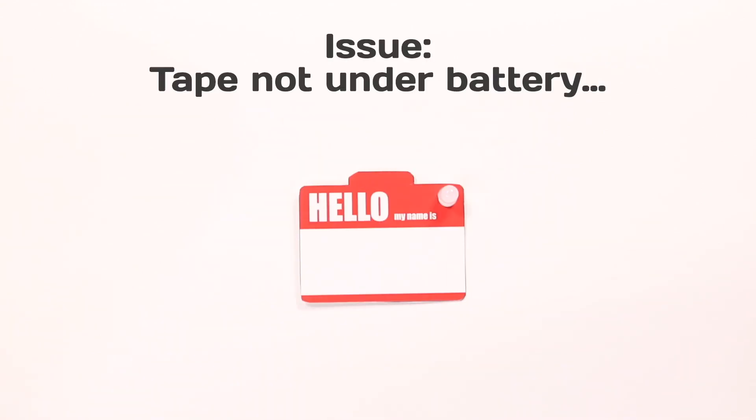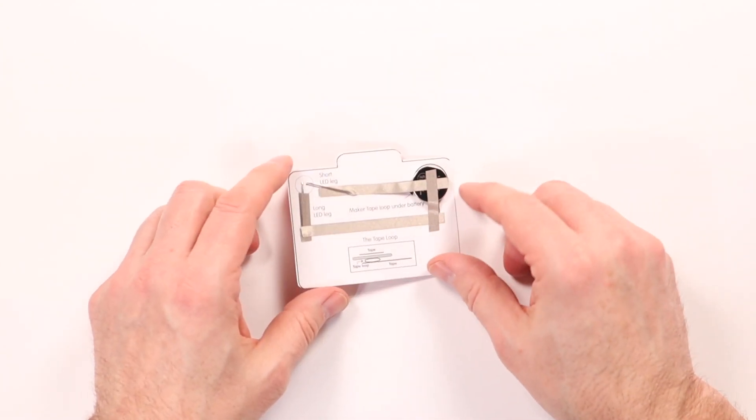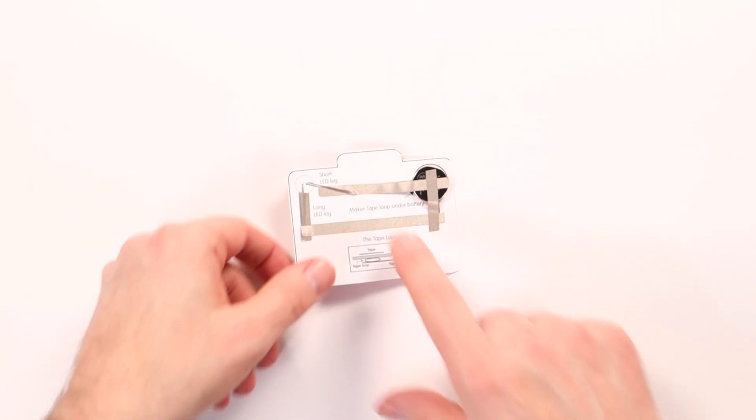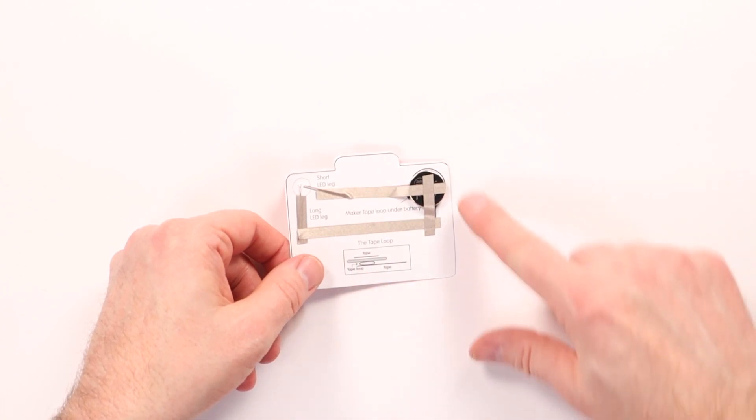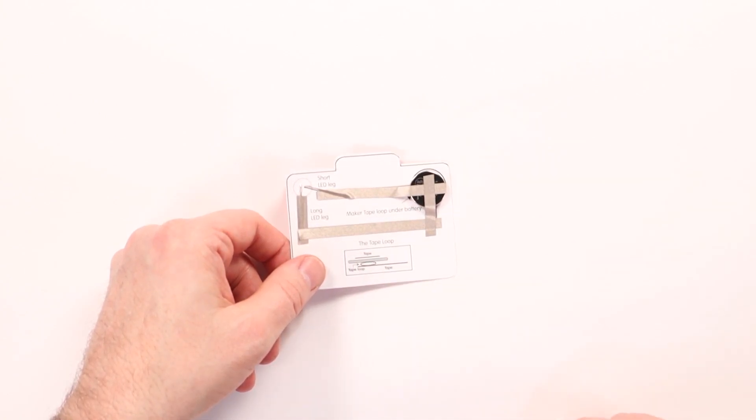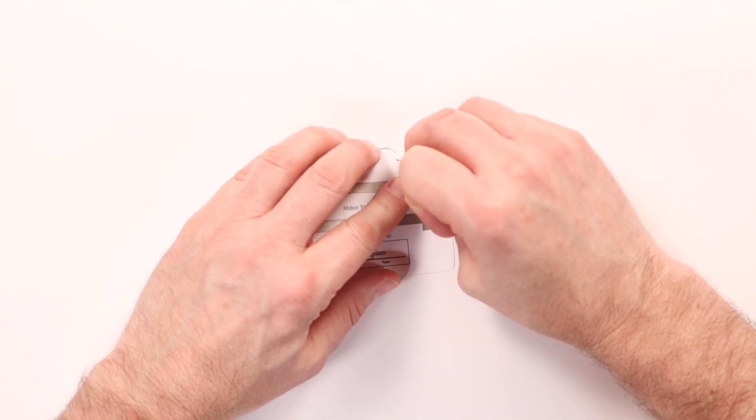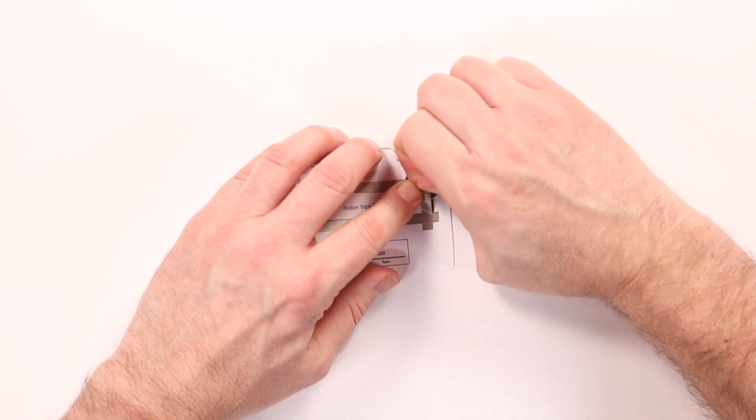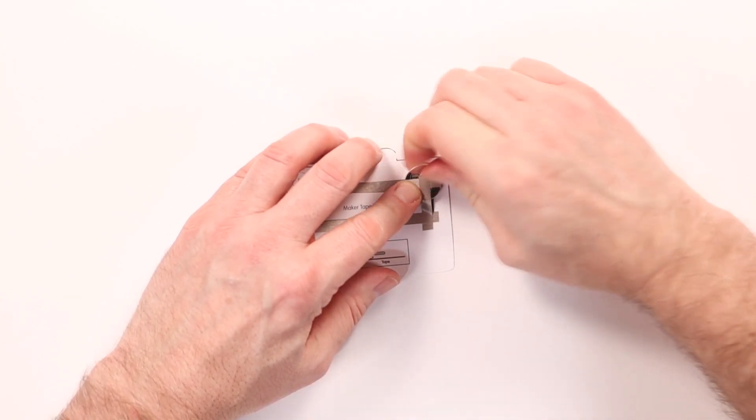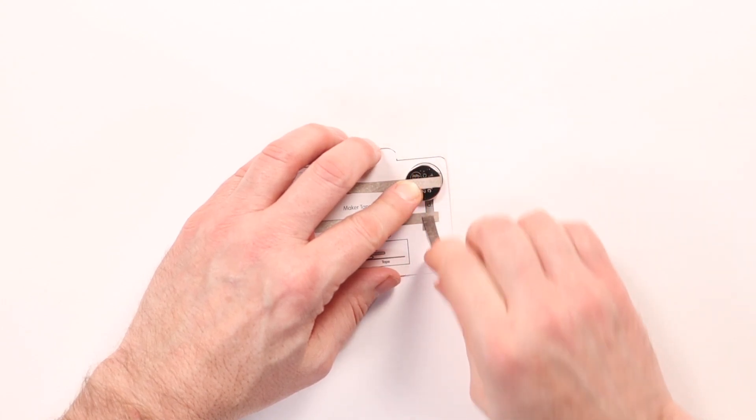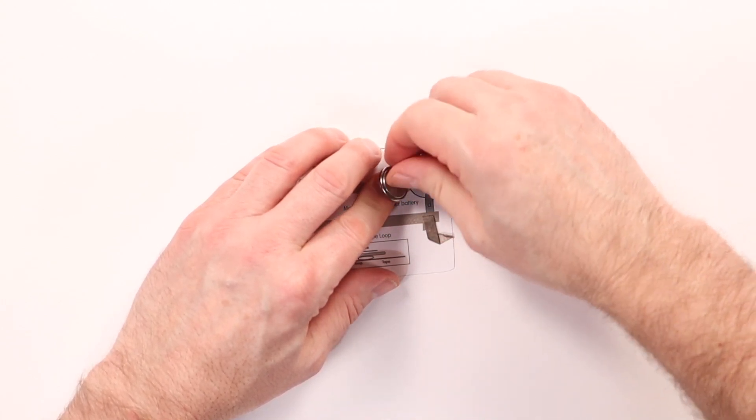Here's another badge that isn't lighting up. So for this one, we can see that this tape strip A is on top of the battery. That needs to be underneath. So let's try to fix that. We're going to peel off D and remove that.